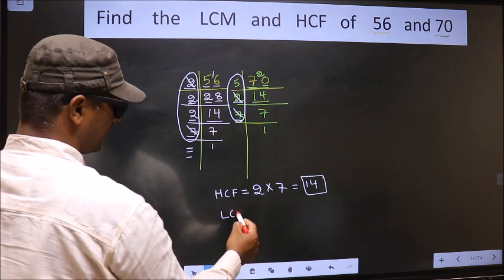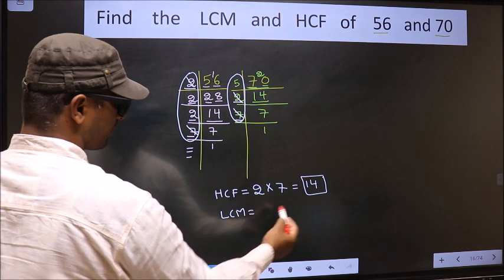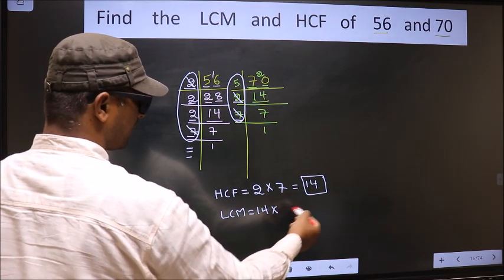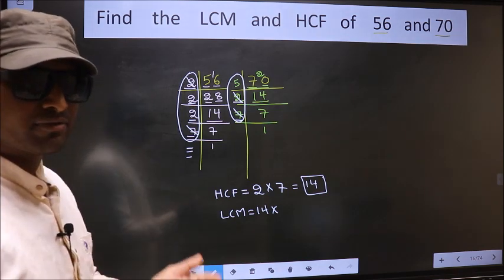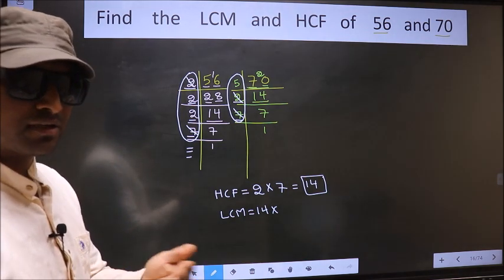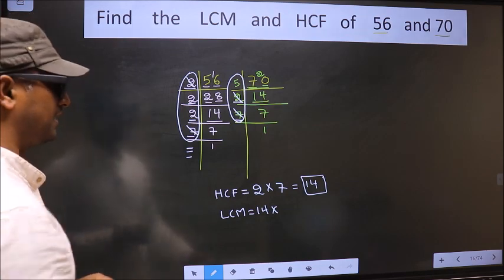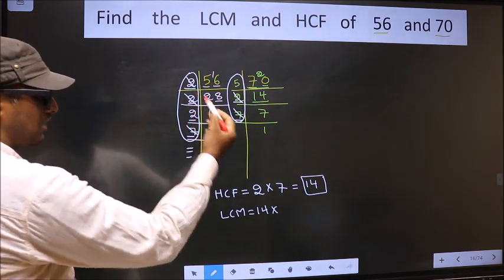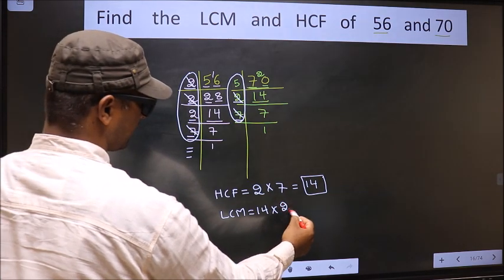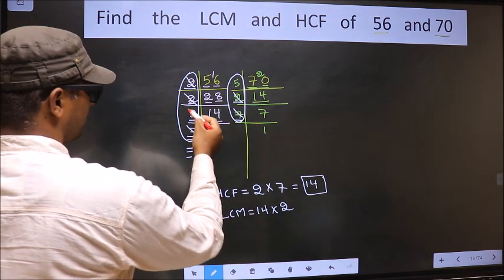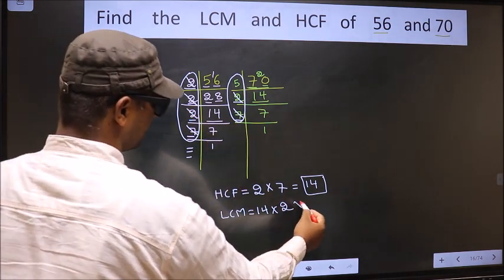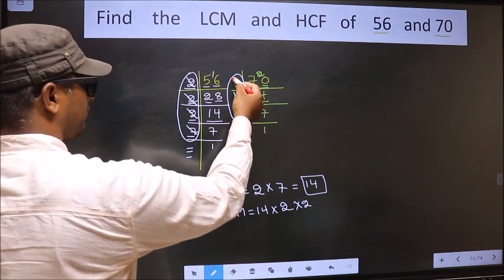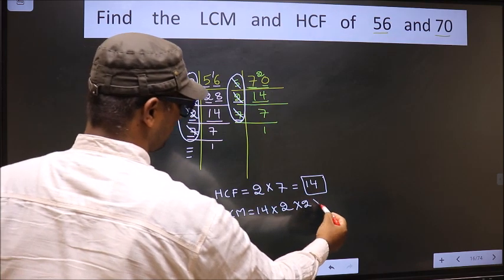Now to get LCM, whatever HCF we got, we should multiply by the numbers which we did not cut. What I mean is, over here we did not cut 2, so now you cut 2 and write here. Now you cut this 2 and write here. Now over here we did not cut 5, so you cut 5 and write here.